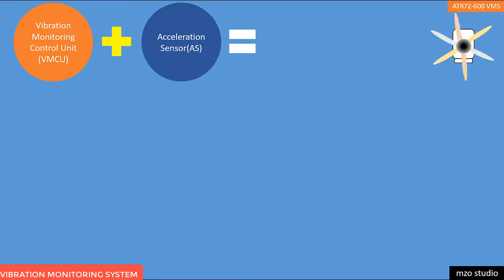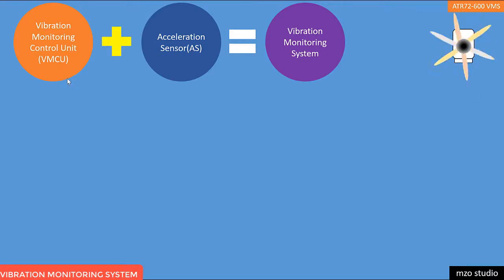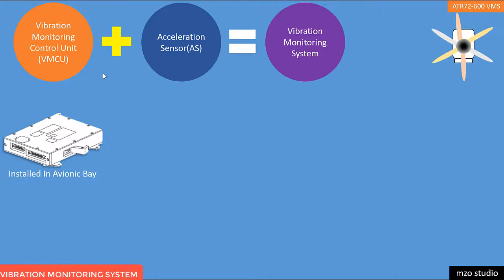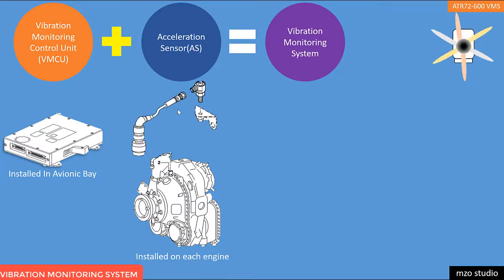Hello, today I'm going to show you what is the Vibration Monitoring System installed on the ATR 72. This is very useful for propeller dynamics. This is a new technology. The VMS is a permission monetary control unit installed in the avionics network, and this is the installation sensors. It is called the Vibration Monitoring System.